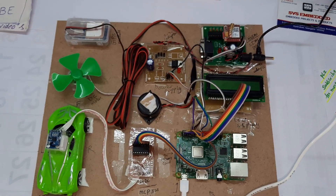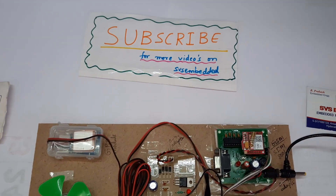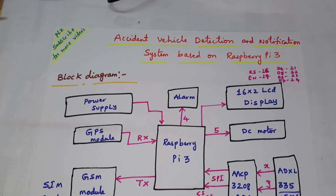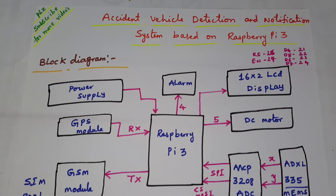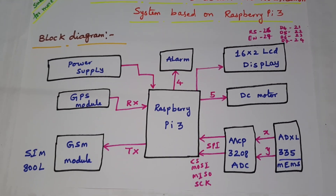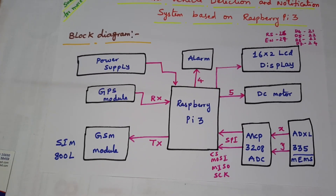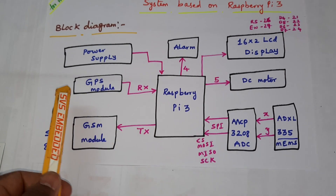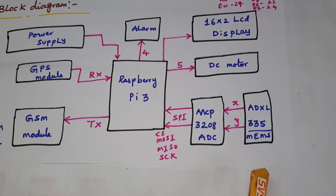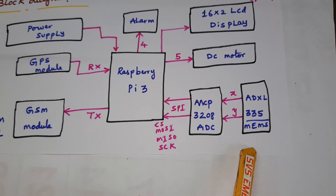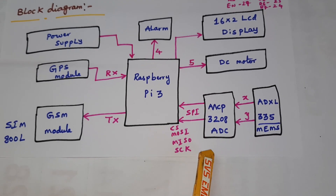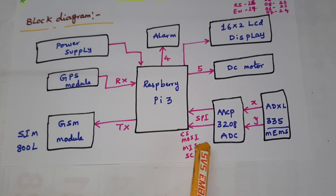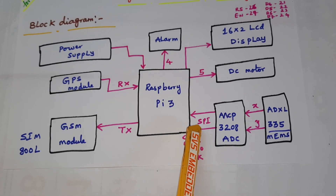Hi, we are from SVS Embedded. The project title is Accident Vehicle Detection and Notification System based on Raspberry Pi 3. In this project we are using a Raspberry Pi 3, one ADXL335 MEMS accelerometer sensor, and one MCP3208 ADC — a successive approximation 12-bit ADC.